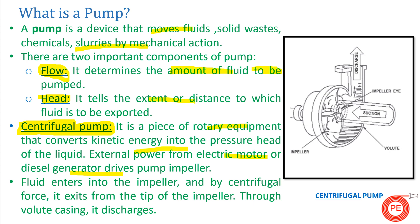The impeller is a cutout-type portion mounted on the shaft. The shaft is connected to the motor, and when the shaft rotates the impeller also rotates. Through the suction port, fluid enters; the impeller rotates the fluid at speed, and through centrifugal action the fluid is moved through the discharge vane and exits outside. Fluid enters the impeller and exits from the top through the volute casing discharge.